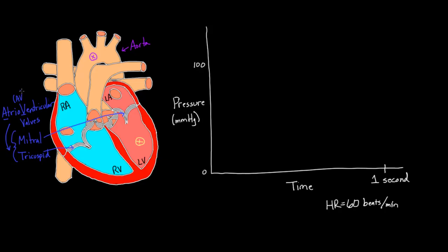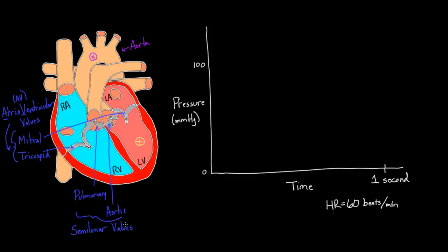The other two valves: this is the pulmonary valve, and on the other side of it is the aortic valve. Put together, we call these the semilunar valves. Semilunar — you might think it refers to a half moon, but there's no common shorthand for it. So people just call them the semilunar valves.